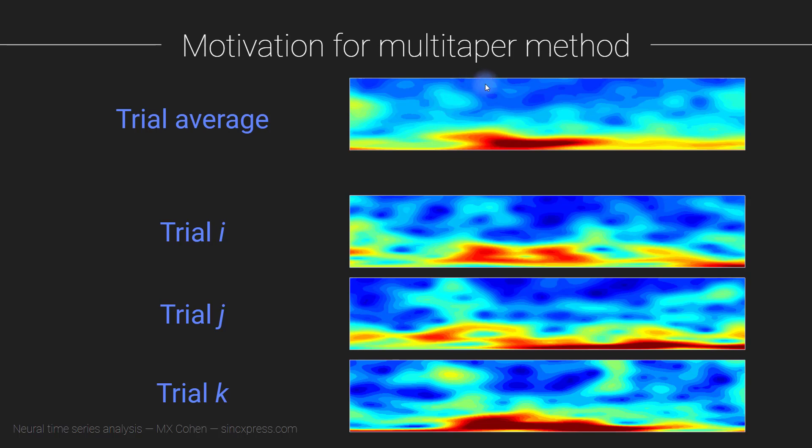You just see a little bit here. But they don't necessarily come through, survive the averaging process as well because they are less time-locked than this lower frequency response. So this is the motivation for the multi-taper method.